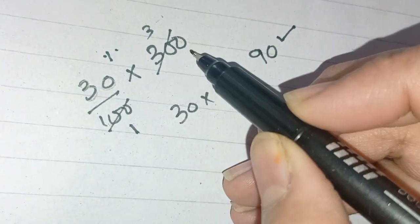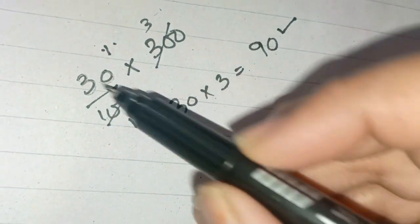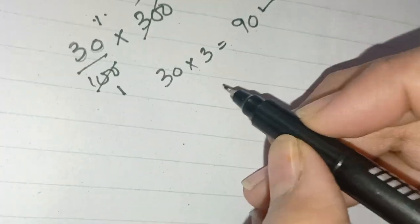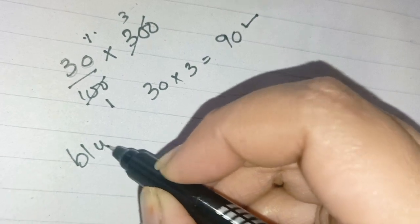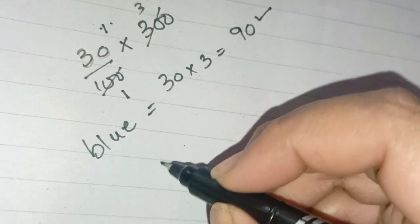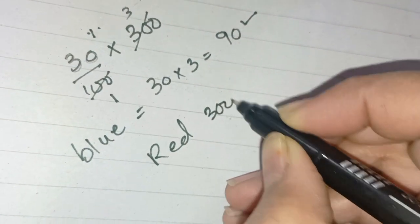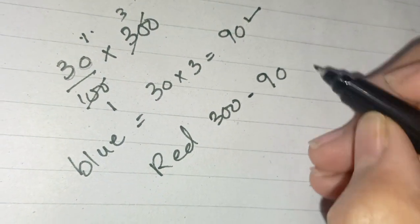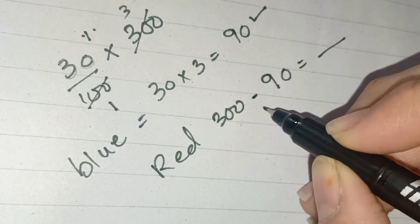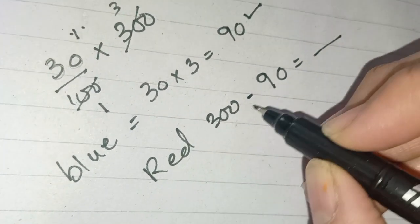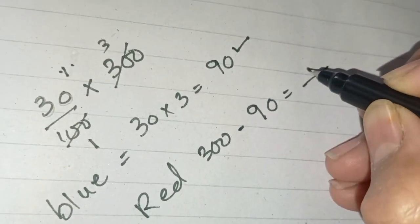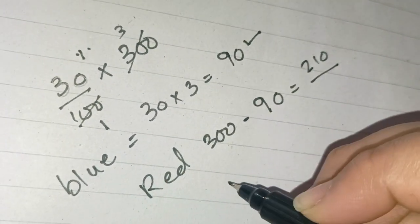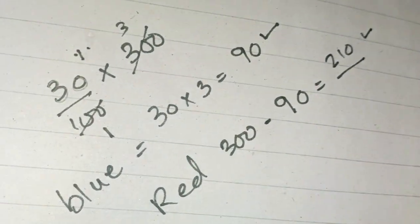We converted 30% into numbers — 30% of 300 is 90. So we have 90 blue beads. The remaining ones will be red beads. So 300 minus 90 is 210. It means 210 are the red beads.